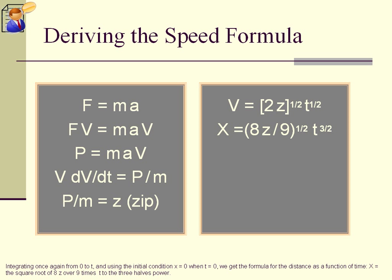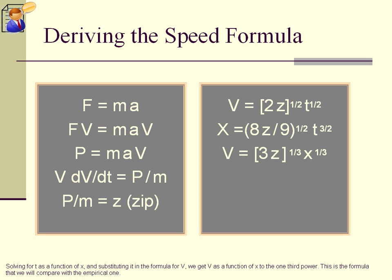Integrating once again from 0 to T, and using the initial condition X equals 0 when T equals 0, we get the formula for the distance as a function of time, X equals the square root of 8Z over 9 times T to the 3 halves power. Solving for T as a function of X, and substituting it in the formula for V, we get V as a function of X to the 1 third power. This is the formula that we will compare with the empirical one.